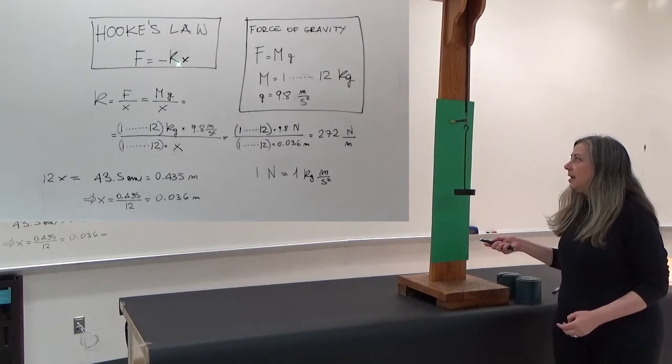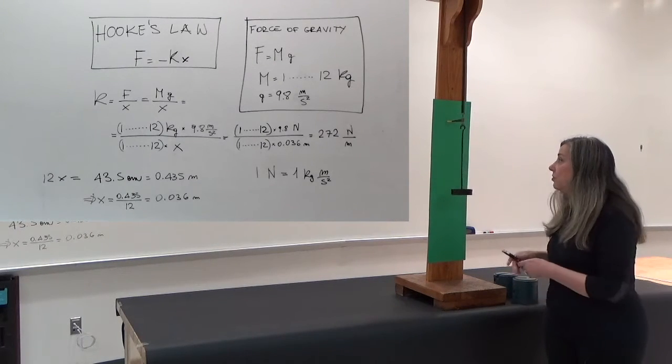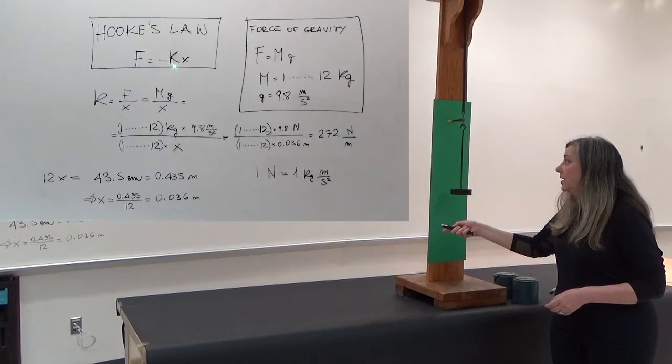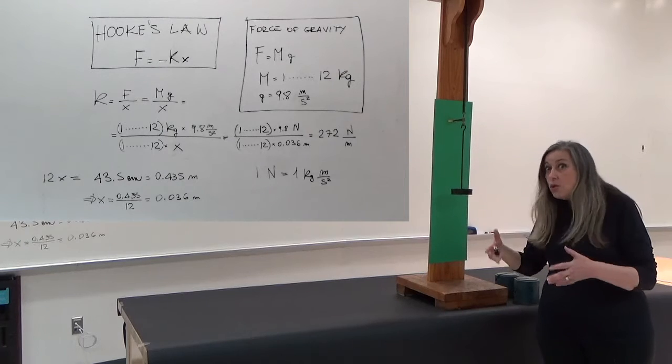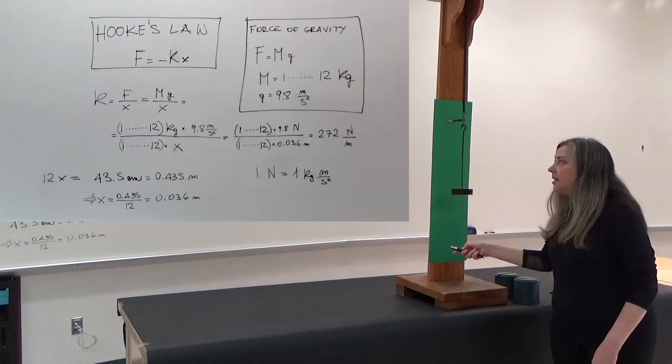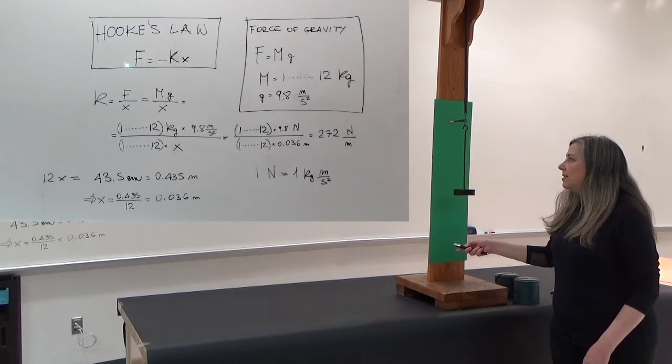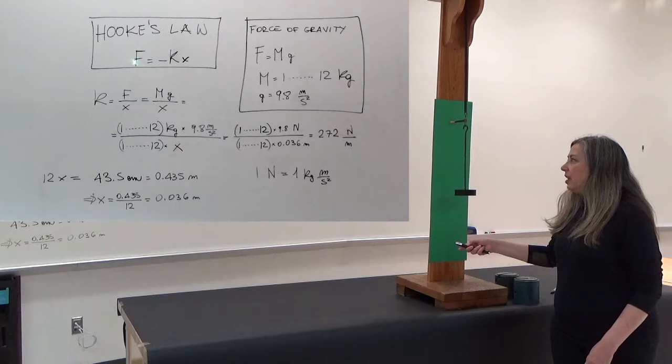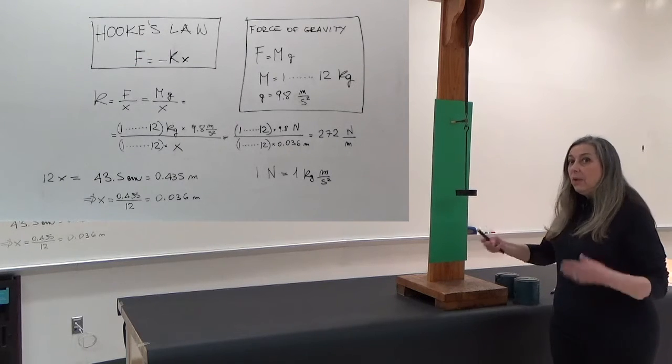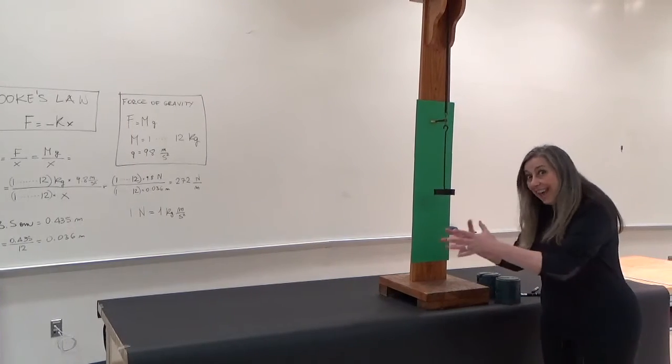k is the spring constant, which is characteristic of this or any other spring, and each spring has its own spring constant, and x is the displacement. What this law says is that the force and the displacement are directly proportional to each other and they vary together.